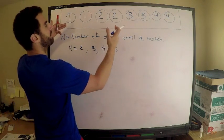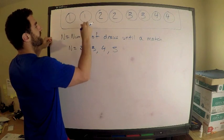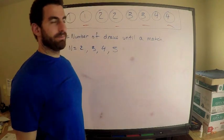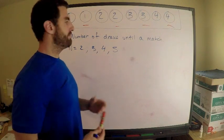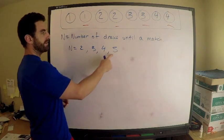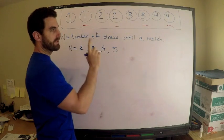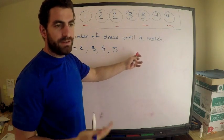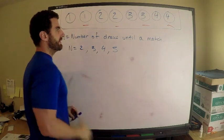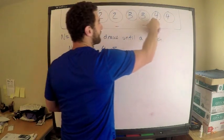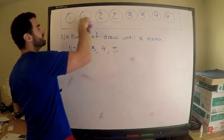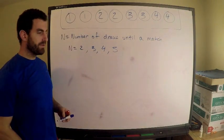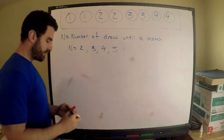Could N be more than five? If you draw five socks, no matter how you pick them — say you draw one, two, three, four different ones — the fifth one has to match one of the previous. So the maximum number of draws until you get a match is five. If you drew six, you'd get two matches. So N can take on the values two through five.